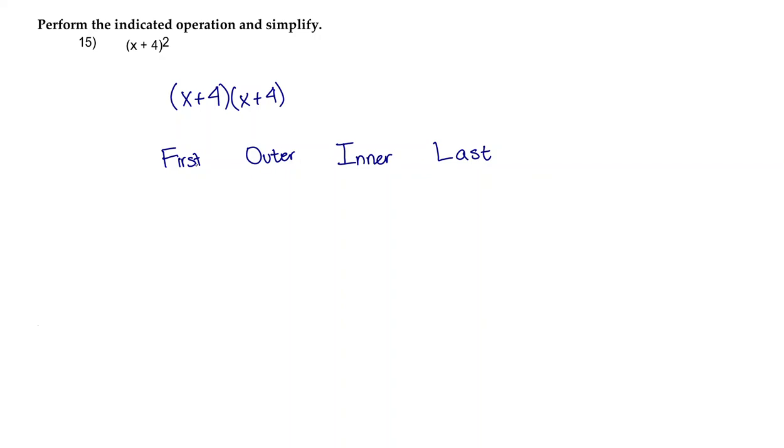That refers to the terms here. So first are your first terms, which is x times x. Outer are your outer terms, which is x times 4. Inner are your inner terms, which is 4 times x. And last are your last terms, which are 4 times 4.